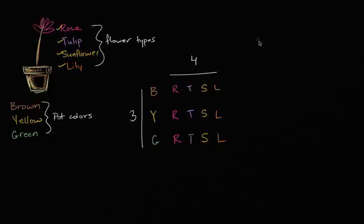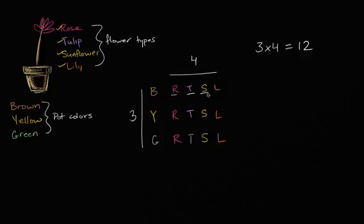So it's going to be three times four — three times four possibilities, or twelve. And you see them right over here: brown with rose, brown with tulip, brown with sunflower, brown with lily, yellow with rose, yellow with tulip, yellow with sunflower, yellow with lily — and so on. Twelve possible pot-flower scenarios to walk out of that florist store with.